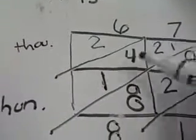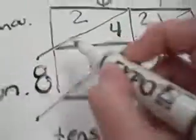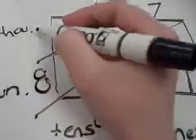4 plus 2 plus 1 plus 1 is equal to 8. And my 2 is 2.